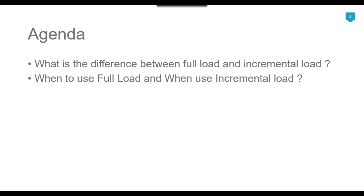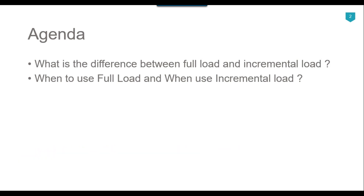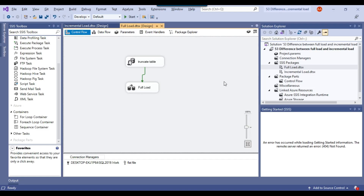In full load, first we truncate the destination table and then we load all data from the source file into the destination file. Let me show you how full load will look like. This is the SSIS package for full load.